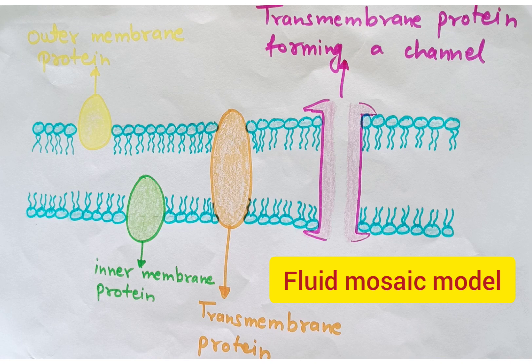The proteins of the cell membrane are glycoproteins and they act as receptors for hormones and neurotransmitters. Carbohydrates are in the form of glycoprotein or glycolipid. The glyco part of the carbohydrate molecule protrudes to the outside of the cell.